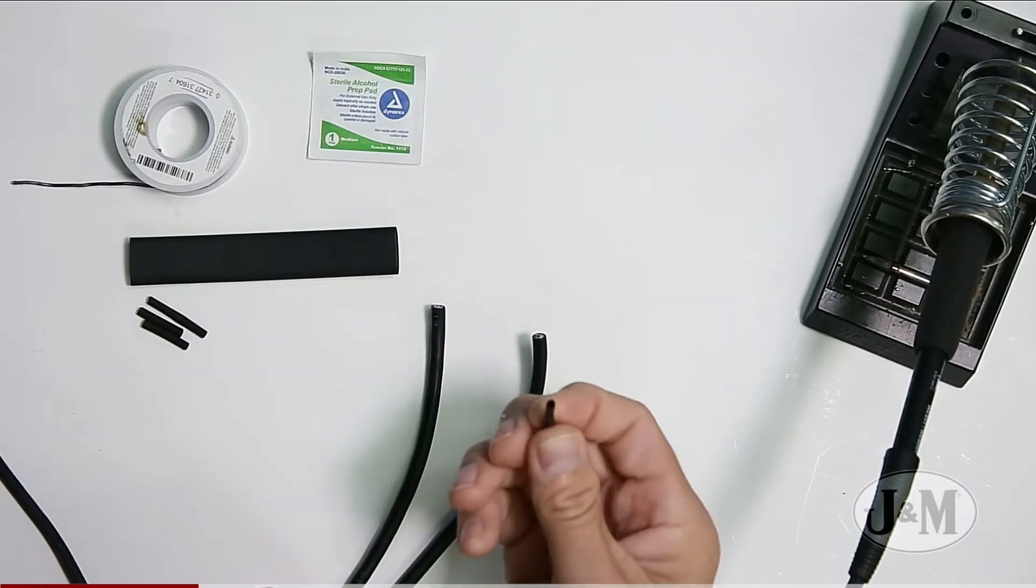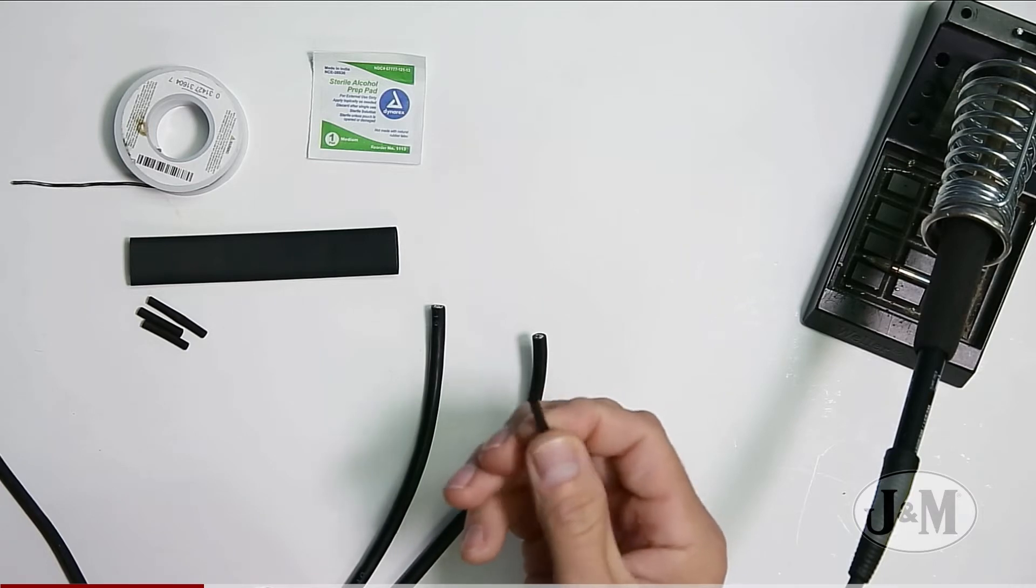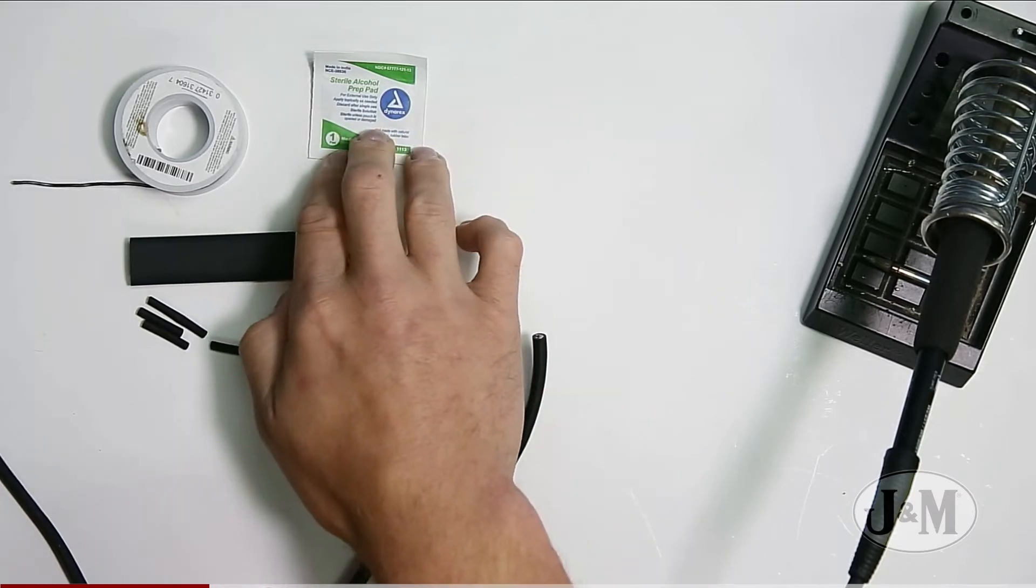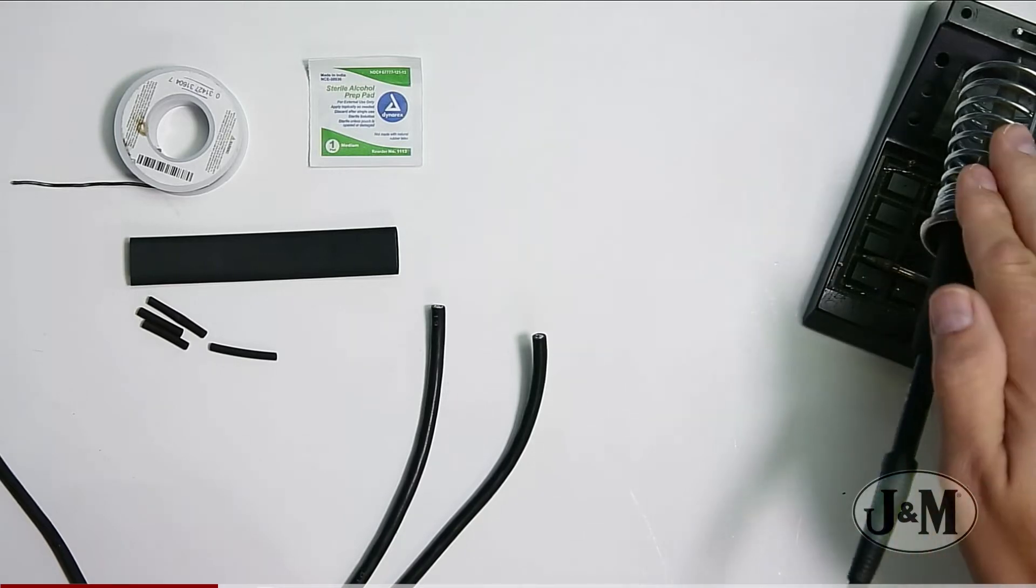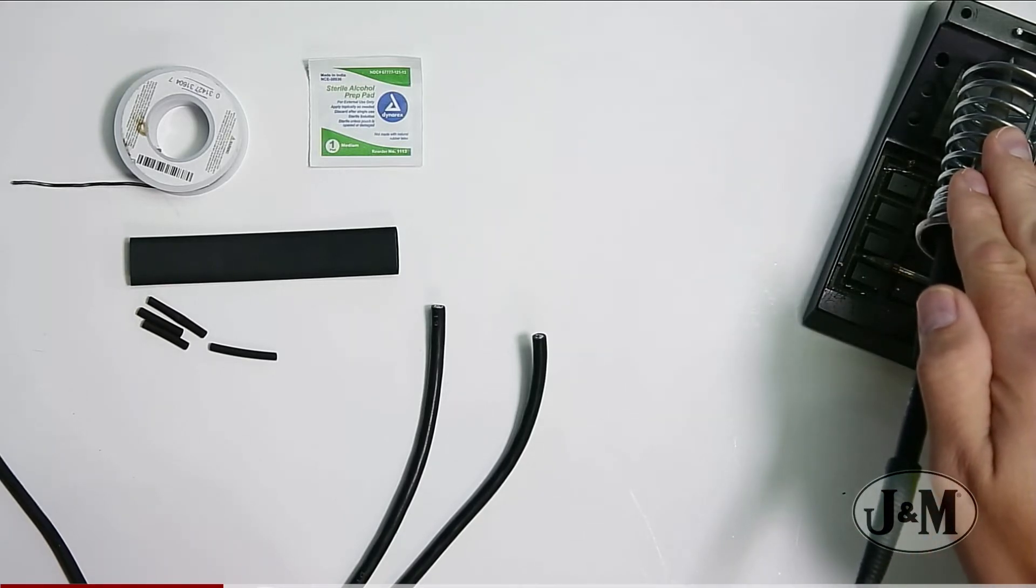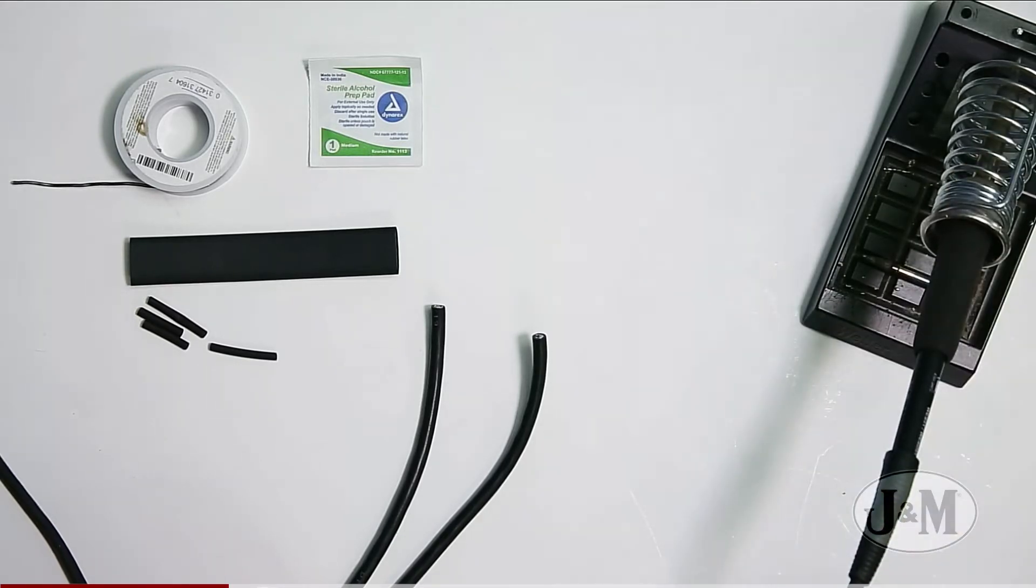We have an eighth inch heat shrink to cover each tip and then we also have an alcohol pad to wipe down the tips when we are done. I currently have my soldering iron here already turned on. I am using 800 degrees.